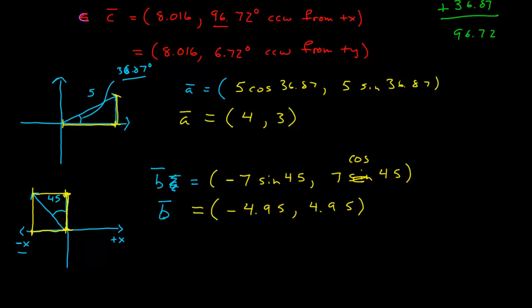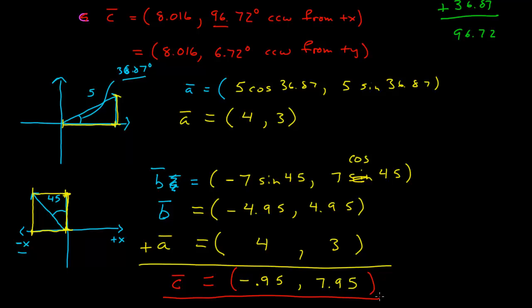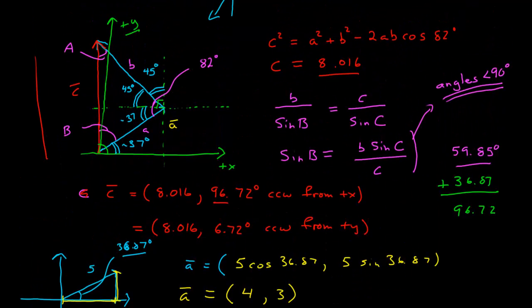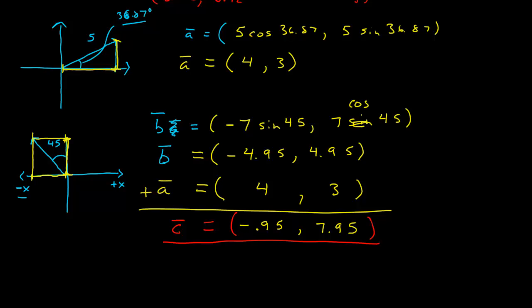And so now we have our coordinates of vector b. And now, if we want to add the coordinates together, all we do is add the components. If we want to add the vectors together, all we do is add the components together. So this is negative 0.95 and this is 7.95. So our c vector is equal to those components and we've solved our problem. And so none of the trigonometry from this, from the previous problem is necessary. We can simply add the components to add the vectors. And that's the end of this module.